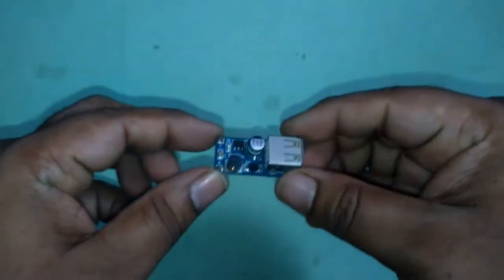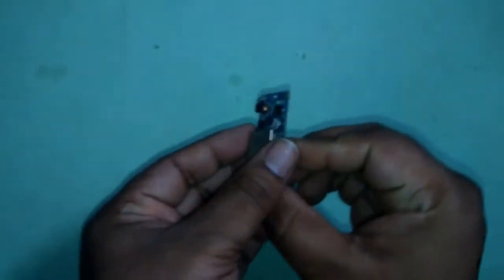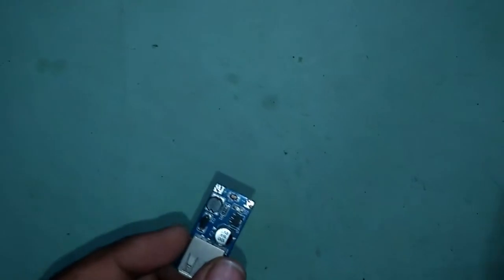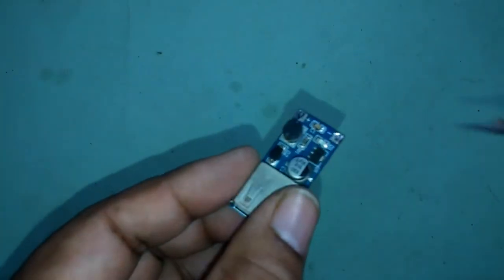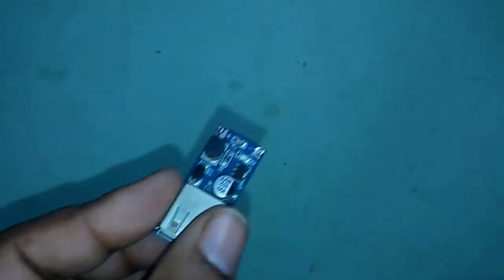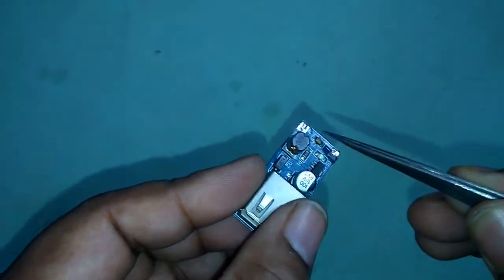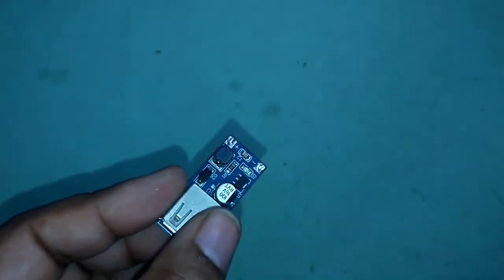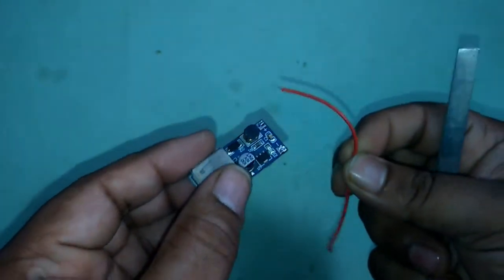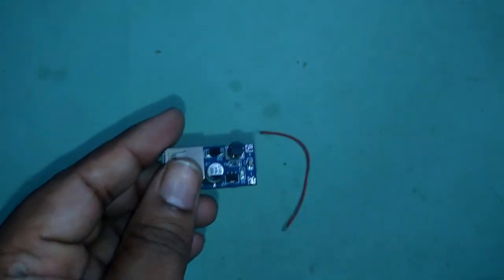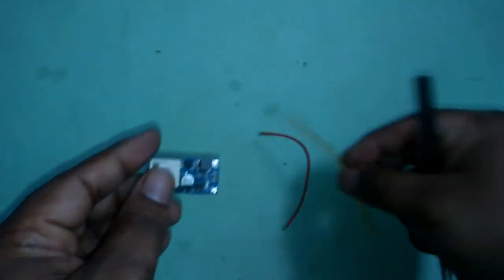Take a 5 volt DC converter. You can see this is negative and here is positive. I will use red for positive and yellow for negative. Now solder here.